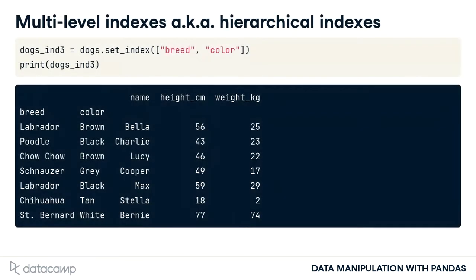You can include multiple columns in the index by passing a list of column names to setIndex. Here, breed and color are included. These are called multilevel indexes or hierarchical indexes — the terms are synonymous. There is an implication here that the inner level of index, in this case color, is nested inside the outer level, breed.